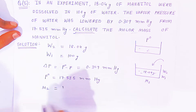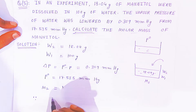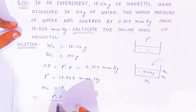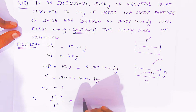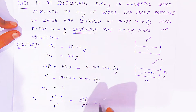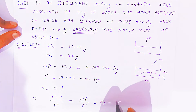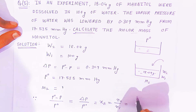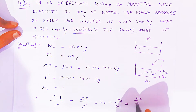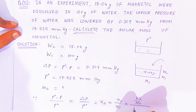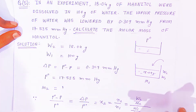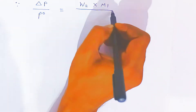Using the Raoult's Law formula: (P0 − P) / P0 = delta P / P0 = x2, which equals N2 / N1, which is (W2 / M2) divided by (W1 / M1). Rearranging, we get delta P / P0 = (W2 × M1) / (W1 × M2).